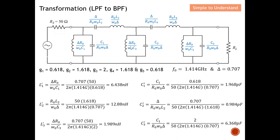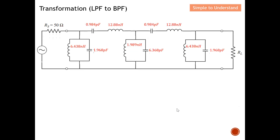For L3: the formula uses fractional bandwidth = 0.707, R0 = 50 Ω, ω0 = 2πf0, and g3 = 2. For C3: using g3 = 2, R0 = 50 Ω, ω0 = 2πf0, and fractional bandwidth = 0.707, we get C3 = 6.368 pF. With all these lumped element values calculated, you can successfully design a band pass filter — transformed from the original low pass filter.